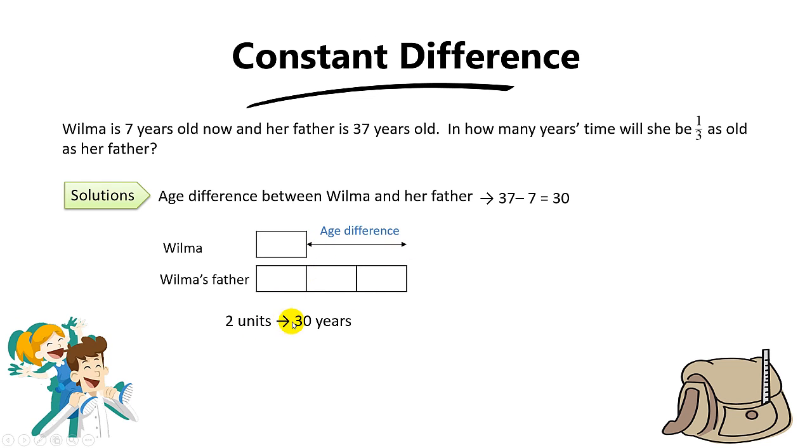So two units will be equals to 30 years. Can you remember? We have found the difference earlier on. And one unit will be 30 divided by 2 which is 15.